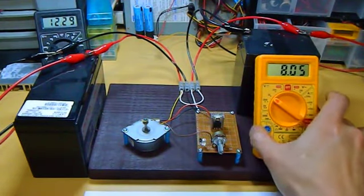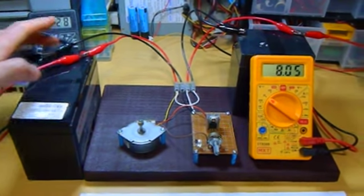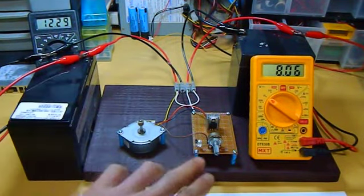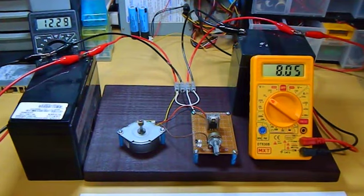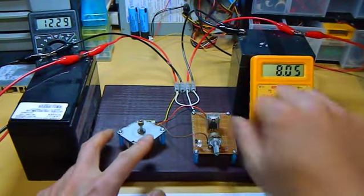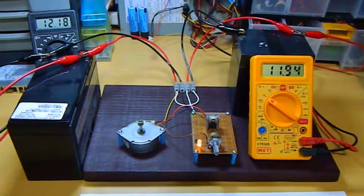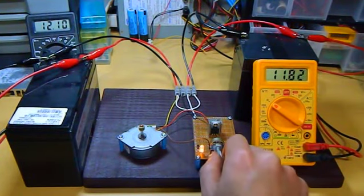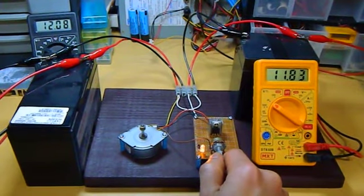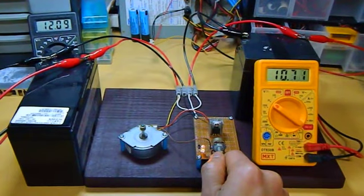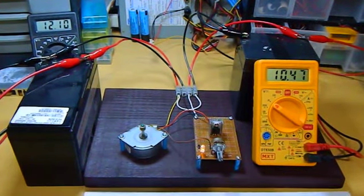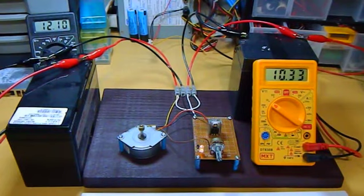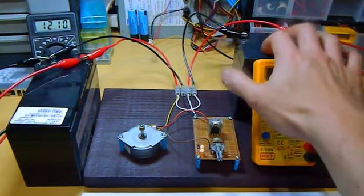This will be the first run. Everything is wired—positive and negative, positive and negative from the batteries. The connections are okay. I think it's okay. This will be the first run. Everything is connected. I think I just have to give a kick on the motor. Oh, it's working!